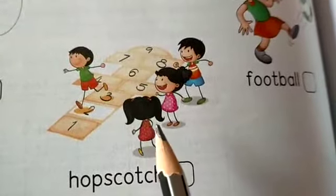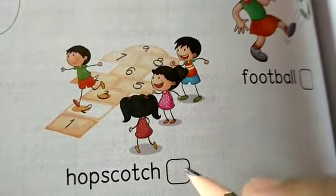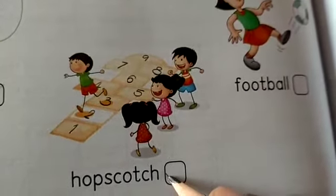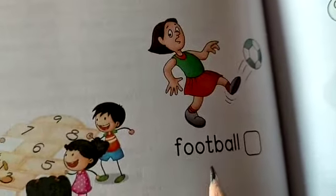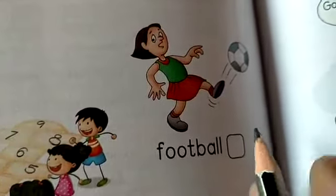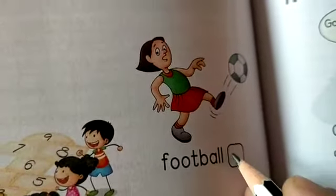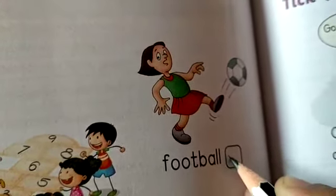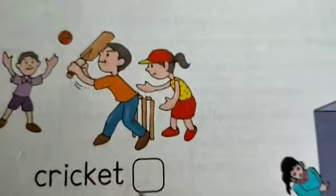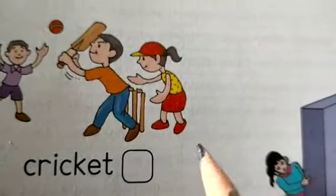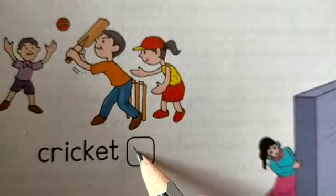Second one is hopscotch. If you like to play hopscotch, you have to put a right mark into the box. Third one is football. If you like to play football, then you have to put a right mark in the box. Next, cricket. If you like to play cricket, then you have to put a right mark.